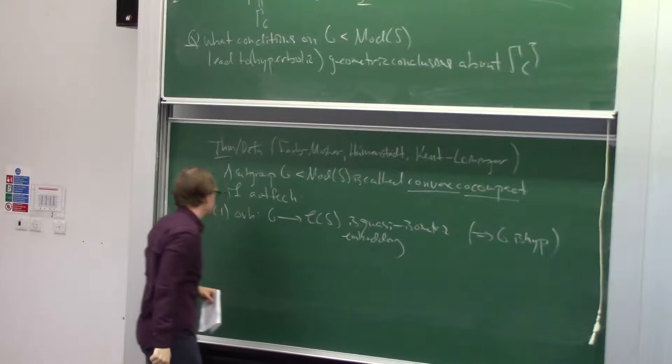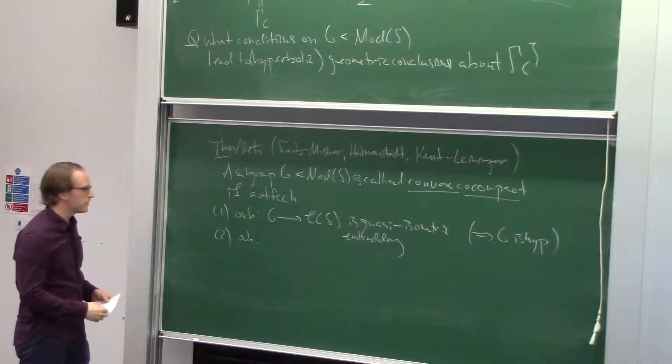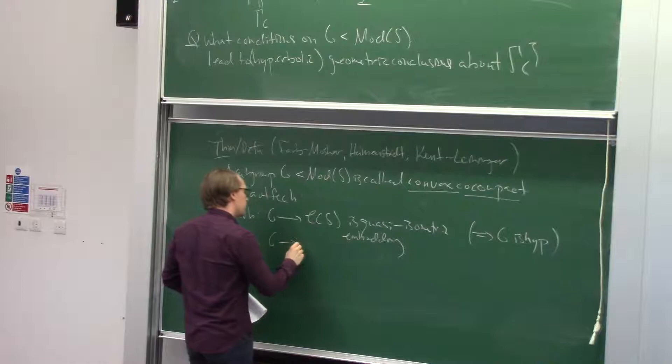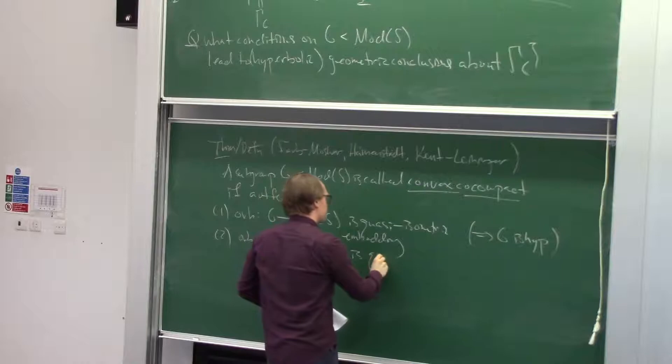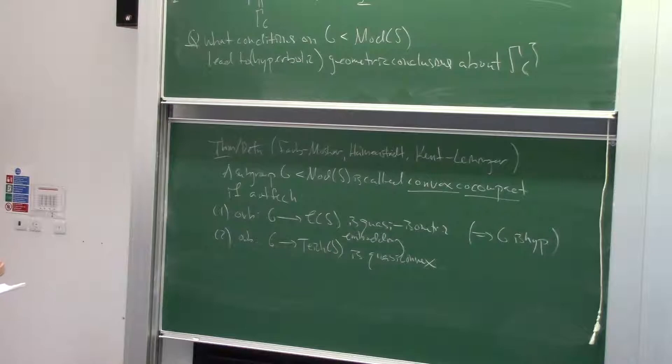Hamenstädt and Leininger both developed this particular characterization. Here's the original definition: you can also think about the mapping class group acting on Teichmüller space with the Teichmüller metric. If the orbit into Teichmüller space is quasi-convex, this is the original definition of Farb-Mosher.